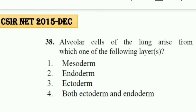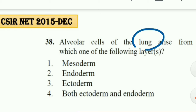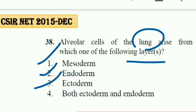Today I will discuss one previous year question from developmental biology. The question is: alveolar cells of the lung arise from which one of the following layers? The options are: first, mesoderm; second, endoderm; third, ectoderm; and fourth, both ectoderm and endoderm.